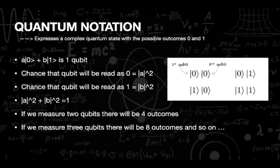The next notation is quantum notation. Here, the only two possible outcomes are 0 and 1. A qubit can be represented as shown in the slide. Similar to the Dirac notation, the probability that the qubit will be read as 0 is |a|² and that of 1 is |b|². The sum of these values will also be 1. If we measure n qubits, there will be 2^n outcomes.